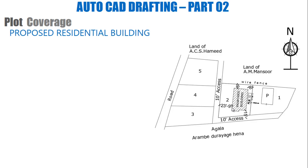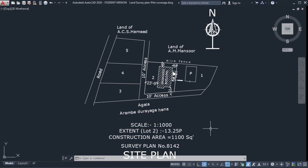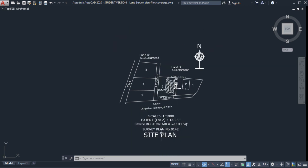Here we have an example site plan with multiple land plots — land numbers one through five — and a road, along with a 10-feet access road. Focusing on land number two, there is a proposed building inside. Since this is a residential building, the plot coverage should be less than 66.67%.